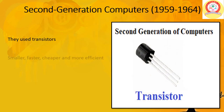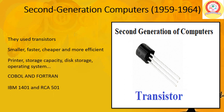Second Generation Computers. These computers spanned from 1959 to 1964. They used transistors and were smaller, faster, cheaper, and much more efficient than first generation computers. They contained all components we associate with modern computers — printer, storage capacity, disk storage, operating system, and more. Programming languages like COBOL and FORTRAN came into use at this time. IBM 1401 and RCA 501 are some examples of second generation computers.